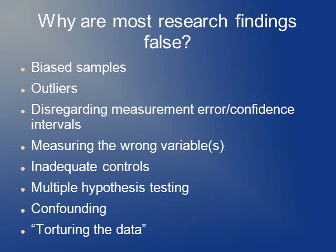I've definitely seen some papers go out from my own research group that I'm almost certain are false, and there are a couple of papers I've had my name attached to that I'm worried might be false. It's unfortunately difficult to avoid. Today I'm discussing some of the most common reasons why published research is false and how to avoid publishing false research. The really common issues are: bias, outliers, not paying attention to measurement error, measuring the incorrect thing, choosing wrong controls, ignoring multiple testing, and confounding.